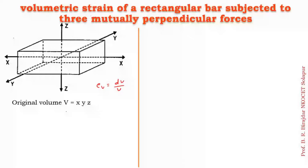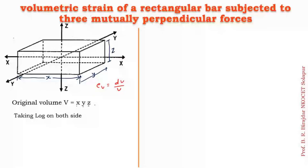First, we find the original volume. We consider the distance in x direction as x, in y direction as y, and in z direction as z. So the length of the rectangular bar in the x direction is x, breadth in y direction is y, and depth or thickness in z direction is z. Therefore, the original volume V is equal to x into y into z.